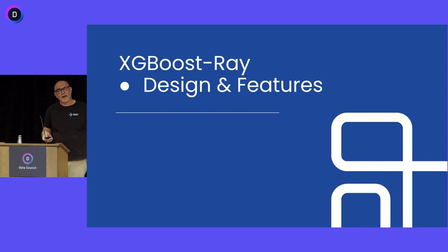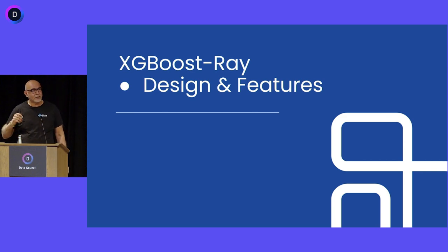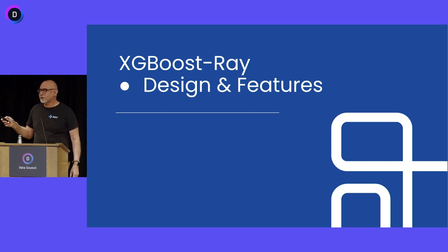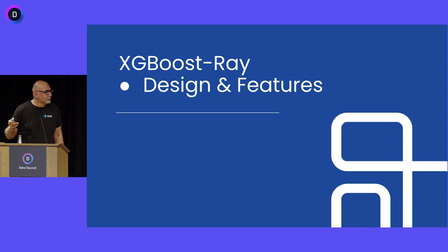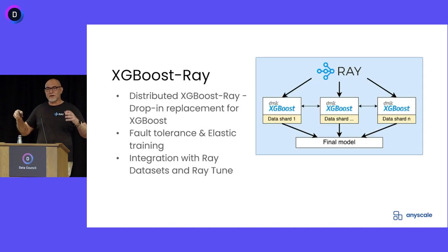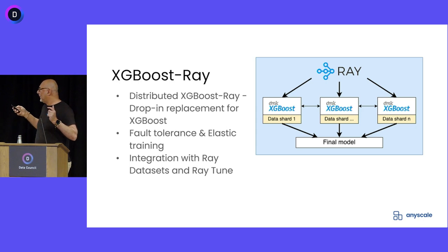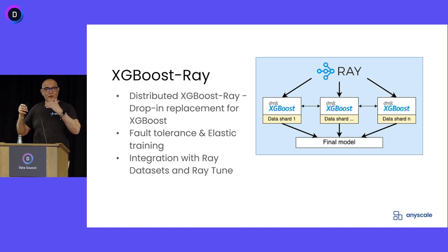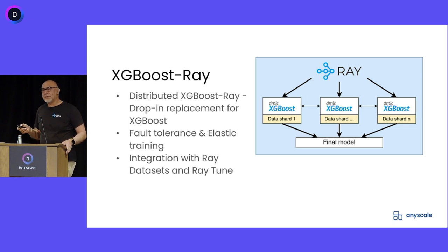XGBoost on Ray is a drop-in replacement for XGBoost. If you want to train in a distributed manner, it uses the data parallel notion — a copy of the model across all workers using different data to train them and then report back. That's what XGBoost Ray is all about.